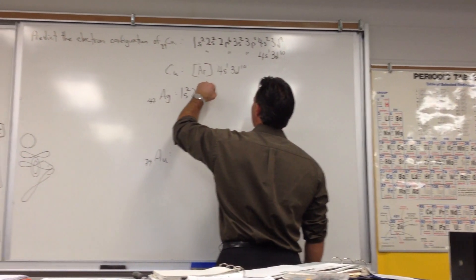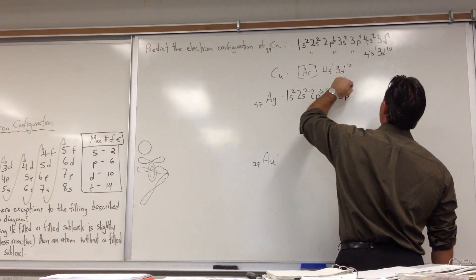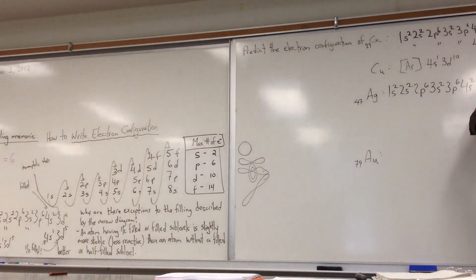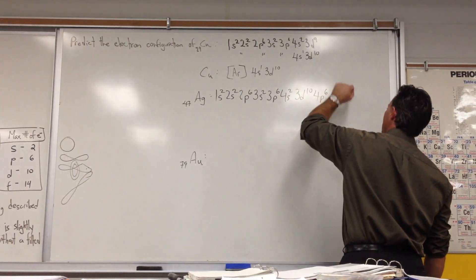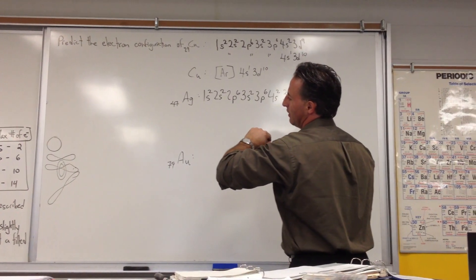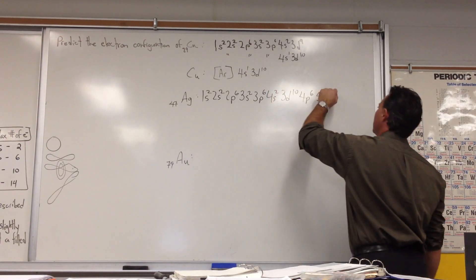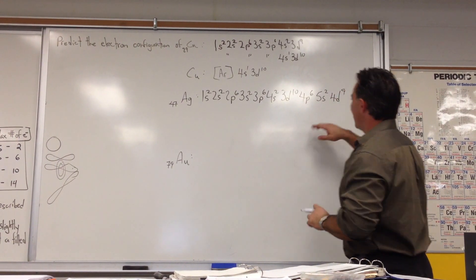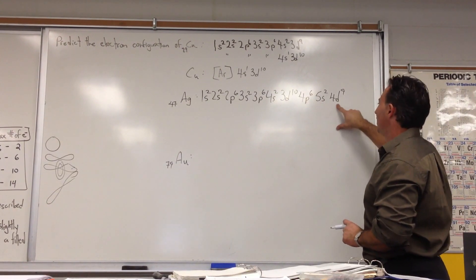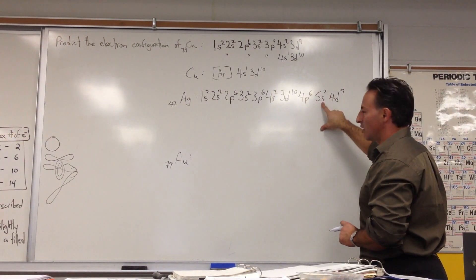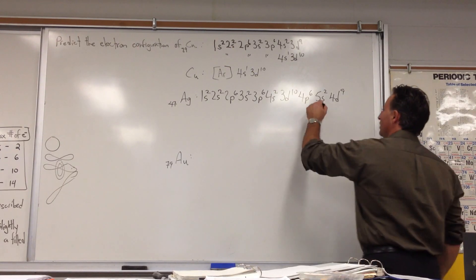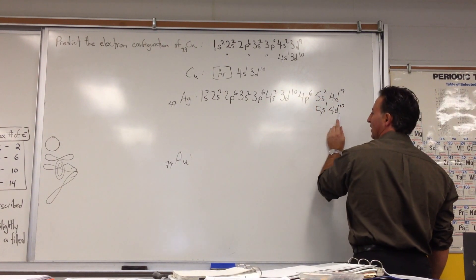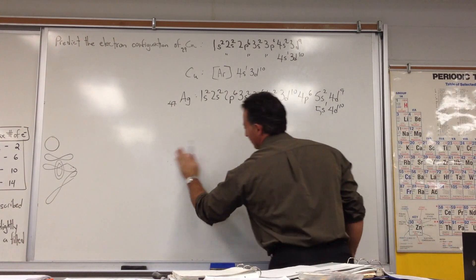And then we're going to say, after 5s, we have 4d9. It would be the prediction from the shell-filling mnemonic. That would be the normal pattern. But what actually happens is, you see what we have here is a filled S shell and an incomplete D shell. But if we promote one electron from the 5s shell into the D shell, we'll have 5s1, 4d10. Now we'll have a half-filled and a filled shell. And that's what actually happens in the atom.